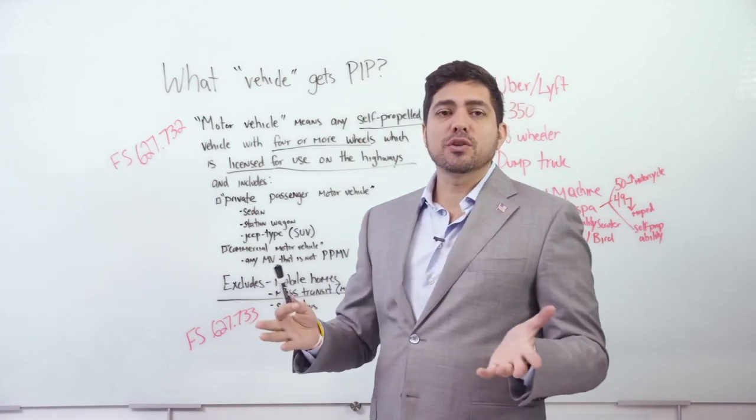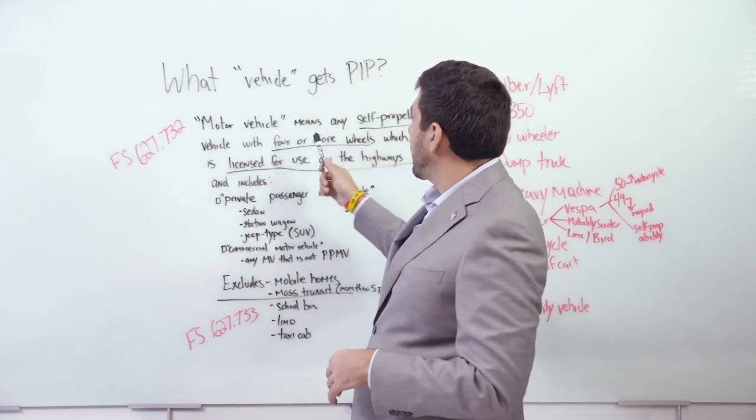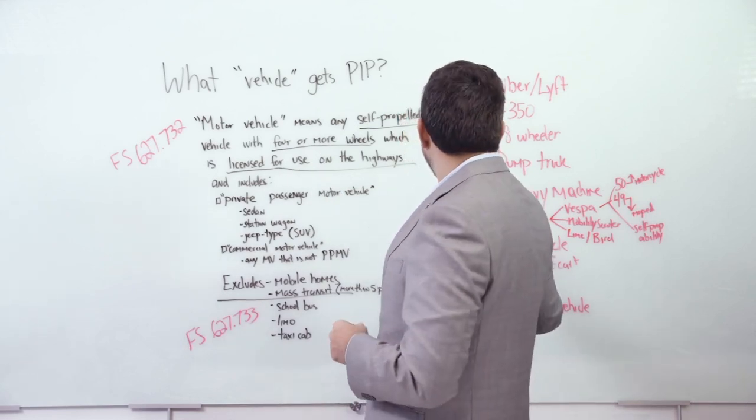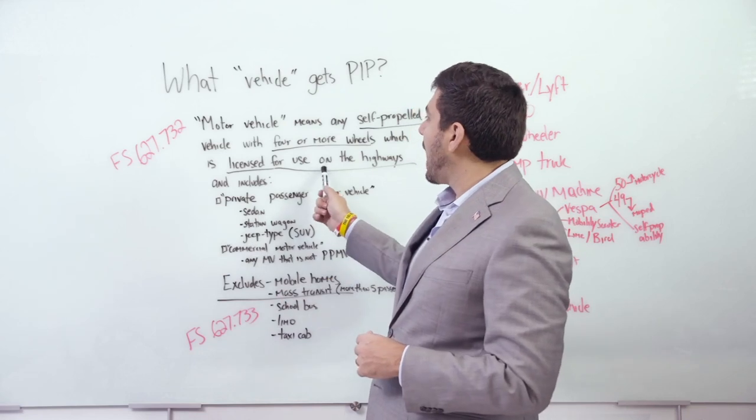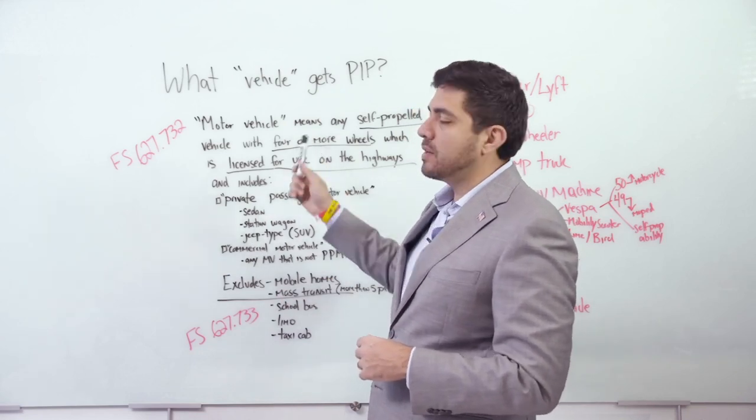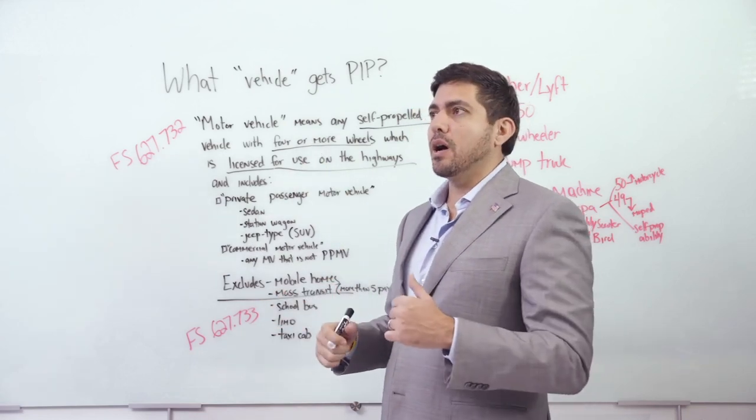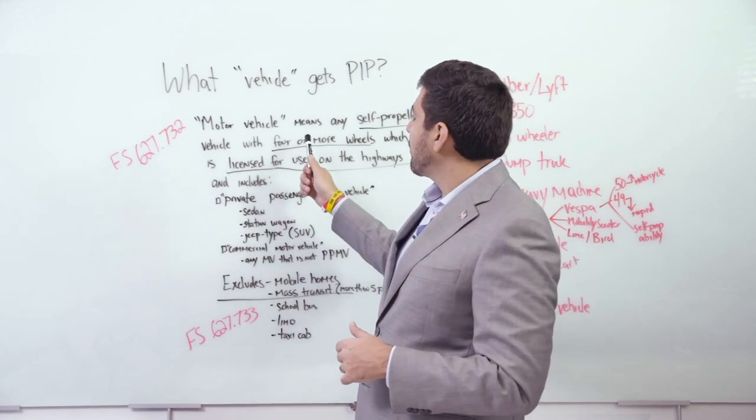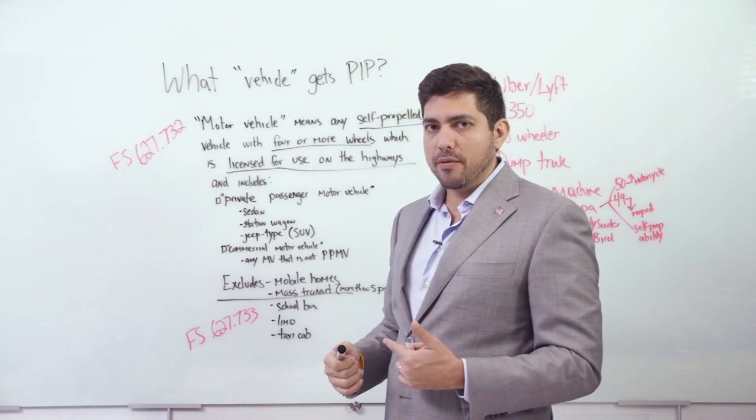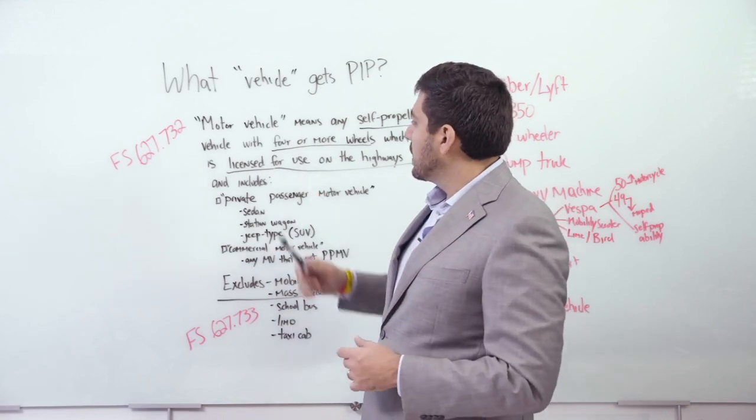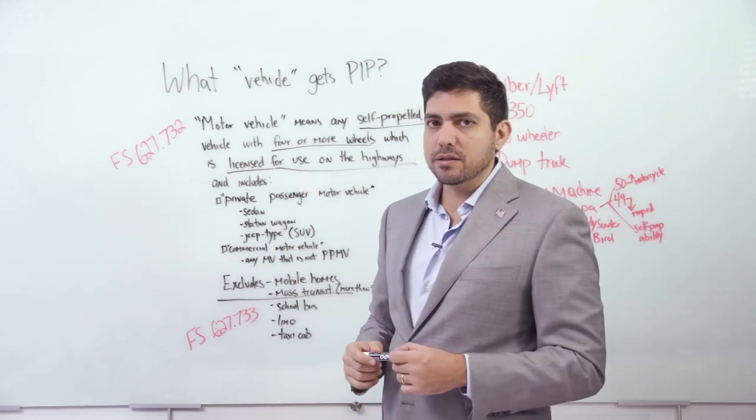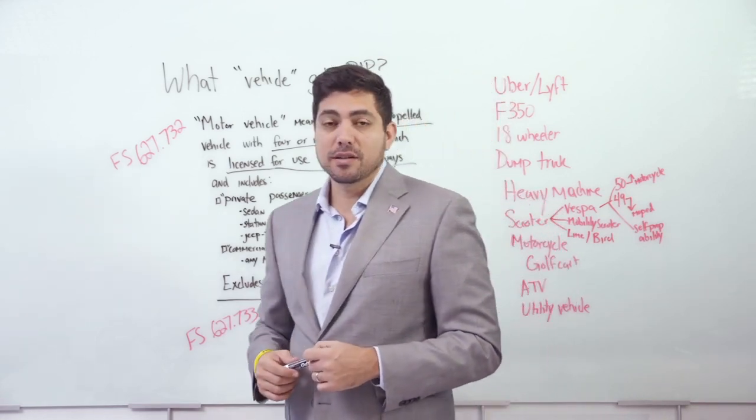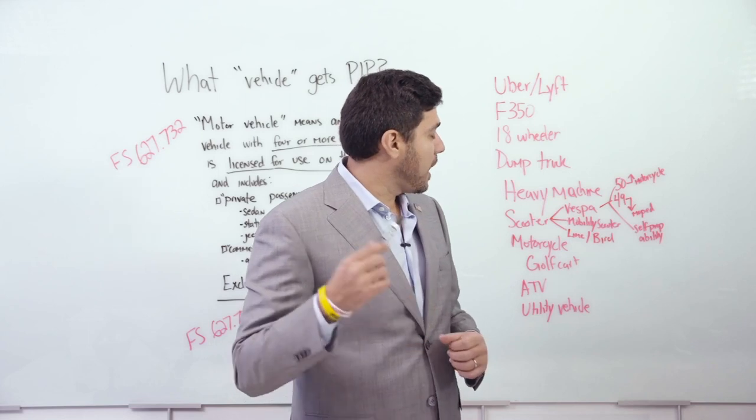18 wheelers. Motor vehicle means any self-propelled. Is it self-propelled? Yes. Four or more wheels, yes. Licensed for use on the highways, yes. Commercial motor vehicle, anything that's not here. So yes, an 18 wheeler is required to carry PIP. Now, sometimes they have work comp. Sometimes they don't have any insurance. As far as weight goes, there's another Florida law regarding commercial vehicles and weight. There's a case, if you're a lawyer, City of Newport Richey versus State Farm, and that held that they are required to carry PIP and that there is no weight limitation.